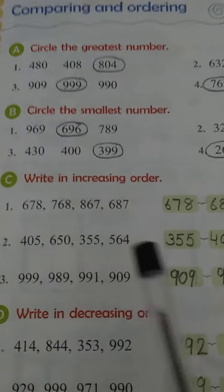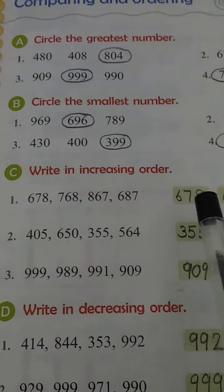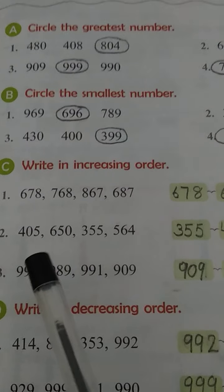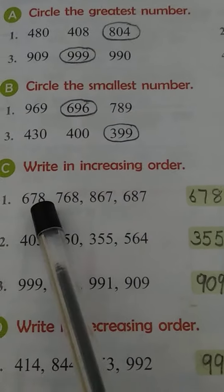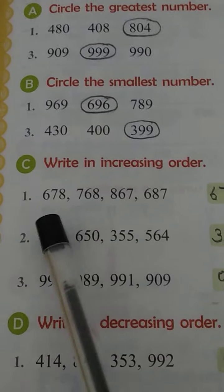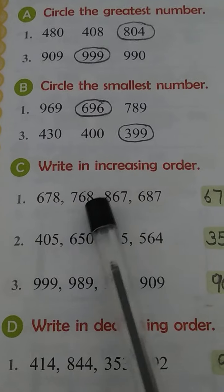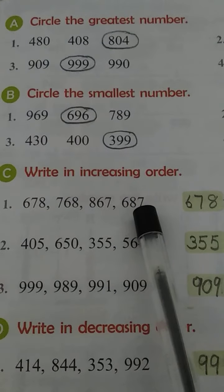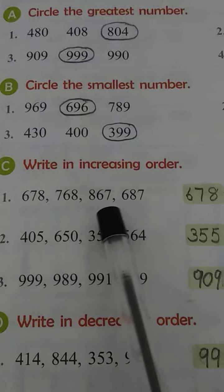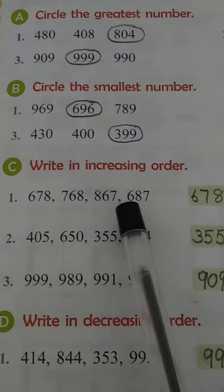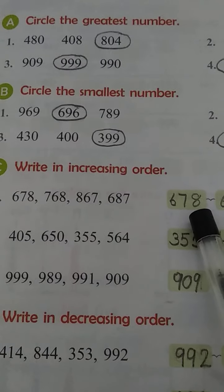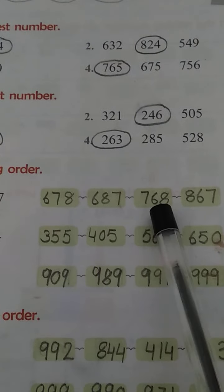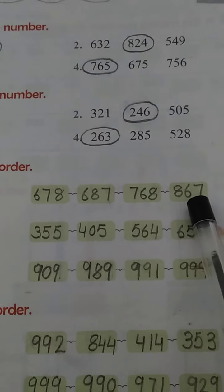Coming to Part C, you have to write the numbers in increasing order. Increasing order, or ascending order, means arranging numbers from the smallest to the biggest. Let's see the numbers: 678, 768, 867, and 687. Arranged in increasing order: 678, then 687, then 768, and the biggest is 867.